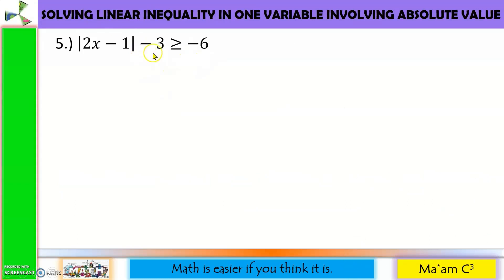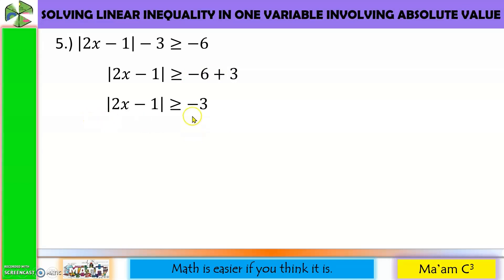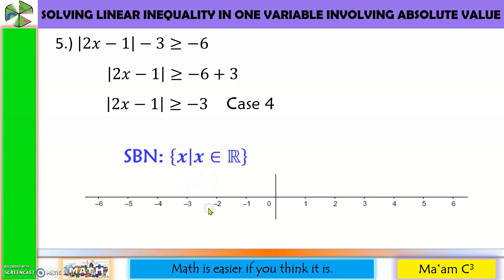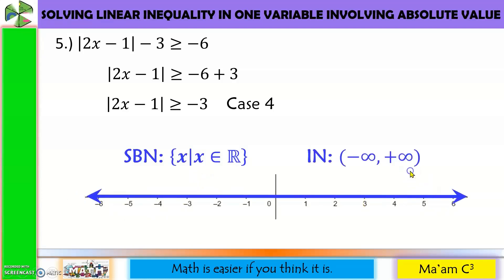Next one. First, move negative 3 to the other side — it becomes plus 3. Negative 6 plus 3 is negative 3. So here we have Case 4, and the solution set is the set of all real numbers. In graph: from negative infinity to positive infinity. Check with 0: 2 times 0 minus 1 gives negative 1; absolute value is 1; 1 minus 3 is negative 2; and negative 2 is greater than negative 6. Correct.